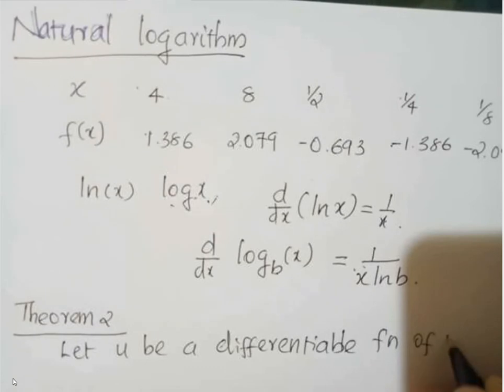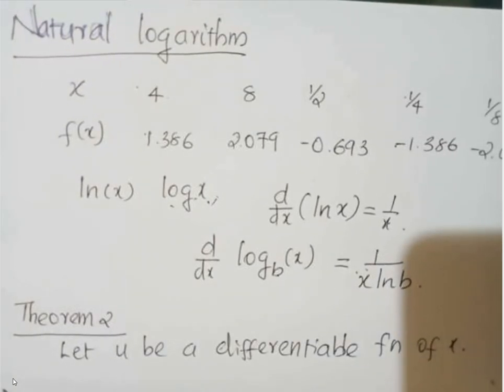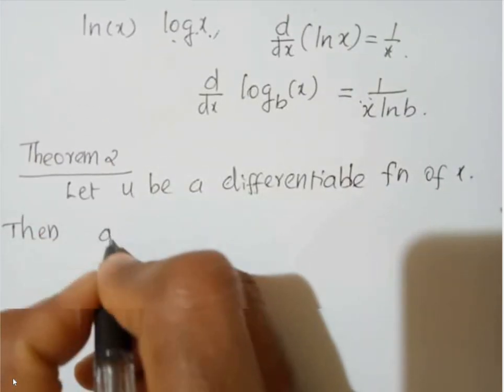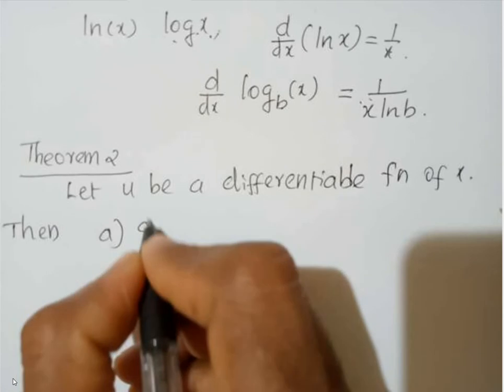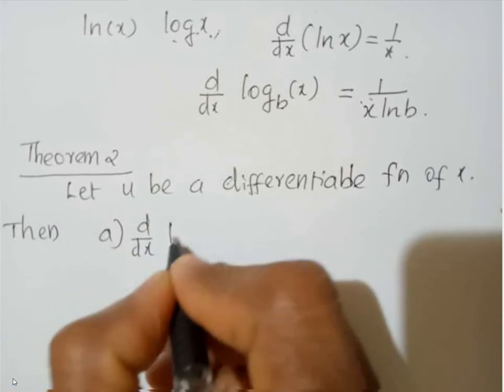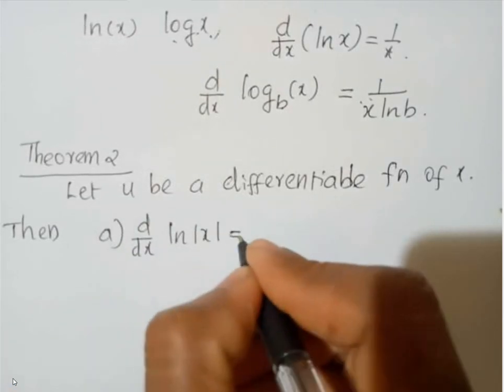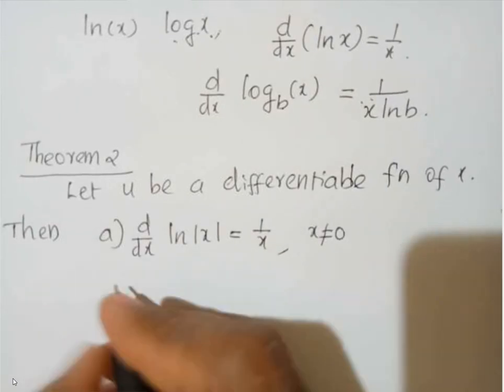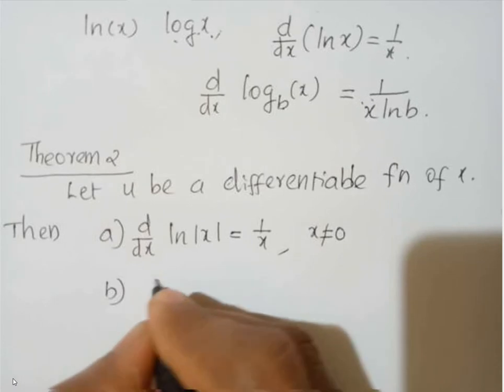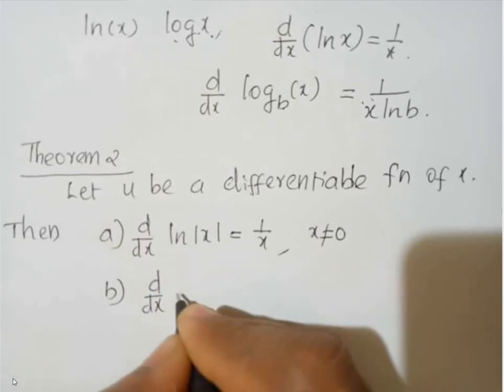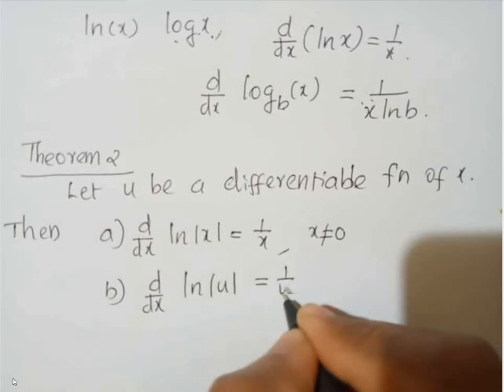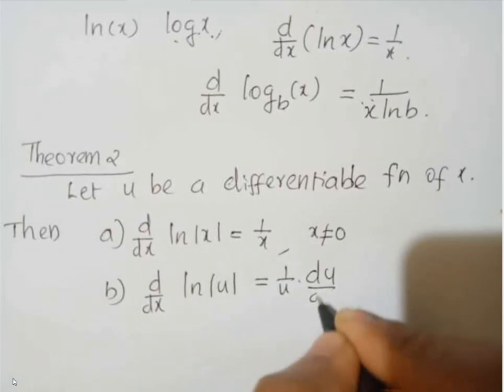Then, d by dx of natural log |x| equal to 1 by x for x not equal to 0. And d by dx of ln |u| is equal to 1 by u into du by dx where u is not equal to 0.